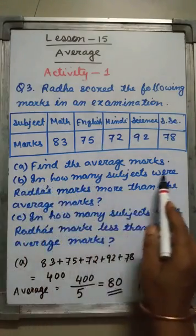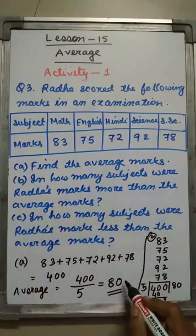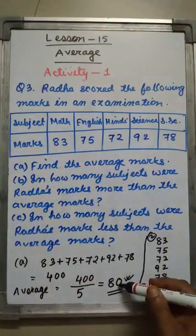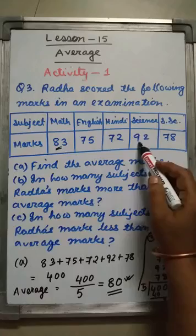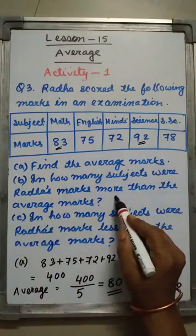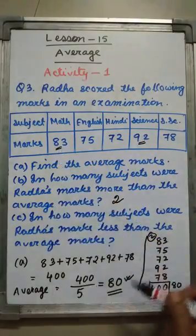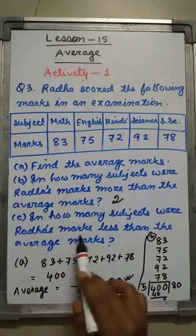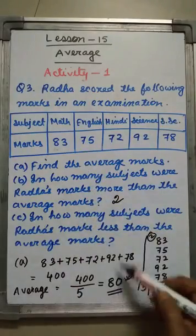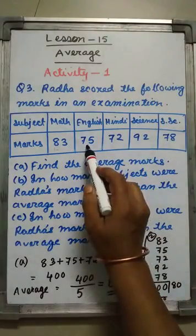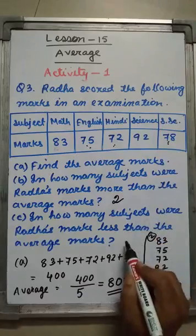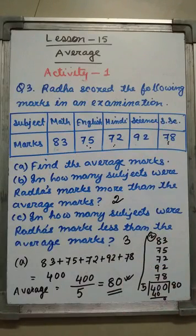Number B: In how many subjects were Radha's marks more than the average mark? Her average mark is 80. In which subjects did she get more than 80? It is 83 and 92 — in two subjects. In how many subjects were Radha's marks less than the average mark? Below average means below 80: 75 is less than 80, 72 is less than 80, and 78 is less than 80. In three subjects she got less than the average marks.